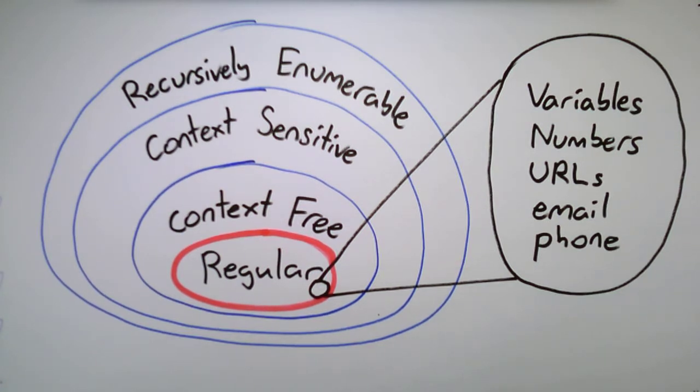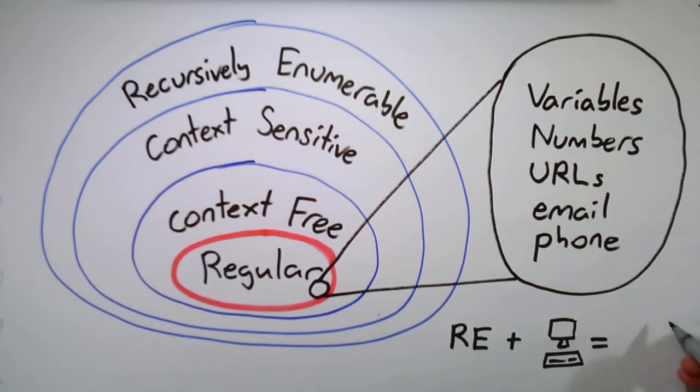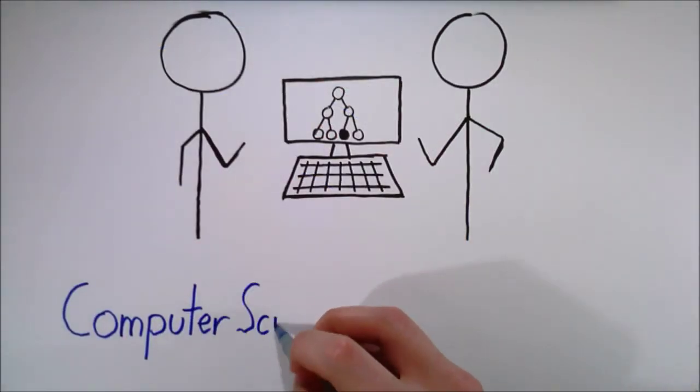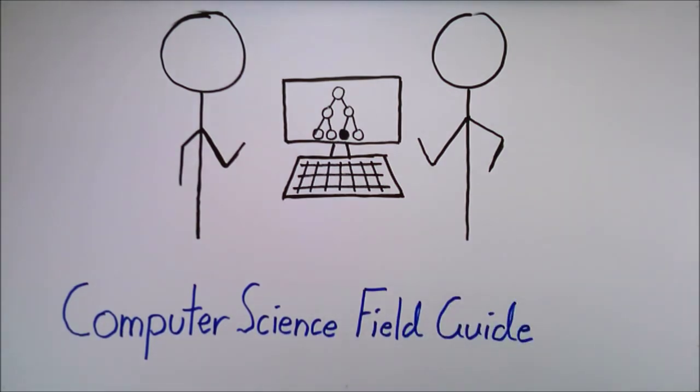Computer scientists find it easier to read regular expressions than finite state automata, but computers are better at following automata, so usually we design an expression, then use a computer program to convert it to an automaton, which is then used as required.